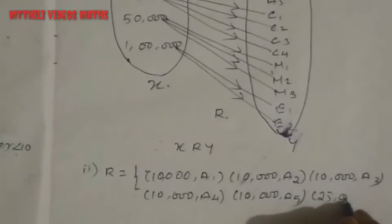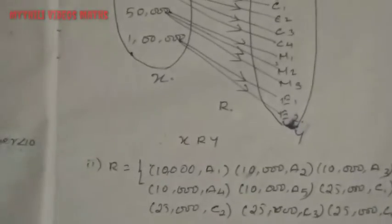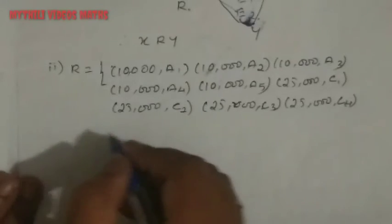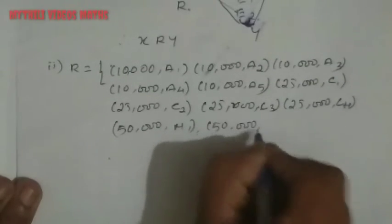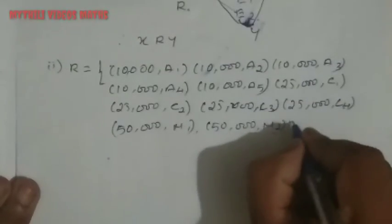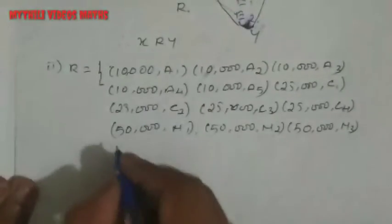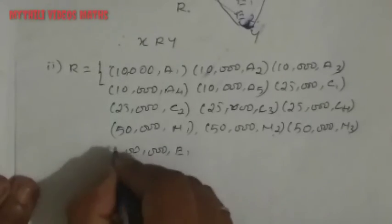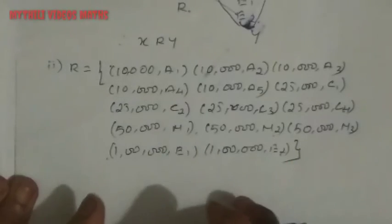Second, we have to write 25,000 comma C1, and then 25,000 comma C2, then 25,000 comma C3, then 25,000 comma C4. Then 50,000 comma M2, and 50,000 comma M3. And then finally 1,00,000 comma E1, then 1,00,000 comma E2. We have to write the relation like this.